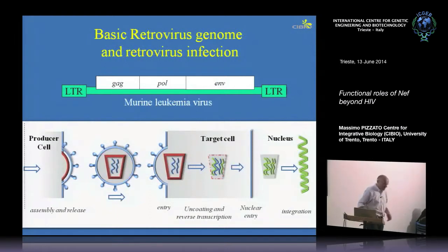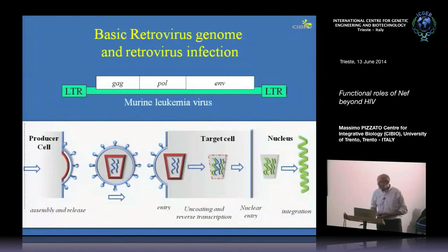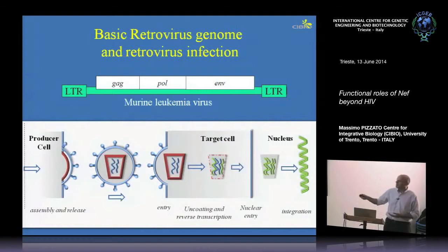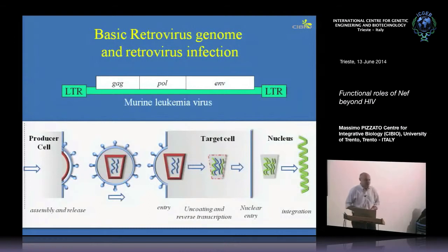Retroviruses, as you know, the whole hallmark of retroviruses is reverse transcription — originally they have RNA in the virus particle, though sometimes there is also DNA — and then the ability to integrate. So the infection is an irreversible process. Today we're going to look at exactly this section of the life cycle of retroviruses.